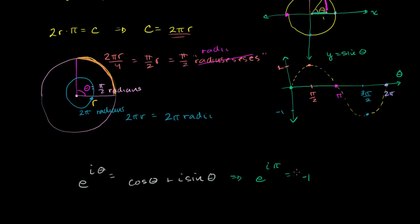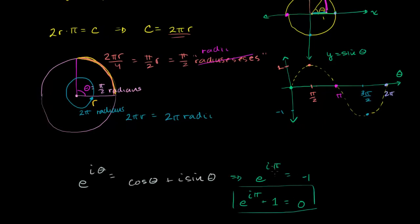So 0 times i. You get this formula which is pretty profound. If you want to put all of the fundamental numbers together in one formula, you can add 1 to both sides and get e to the i pi plus 1 is equal to 0. This is sometimes called Euler's identity, the most beautiful formula in all of mathematics.